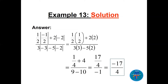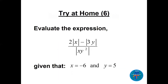The answer is −17/4. Looking at the solution: (1/2) times |−1/2| = 1/2 × 1/2 = 1/4. Then 2 × |−2| = 2 × 2 = 4. The denominator: |−3| = 3 and |−2| = 2, so 3×3 = 9 down; 5×2 = 10 with a minus. Using LCD, 1/4 + 4 gives 17/4, divided by −1, which equals −17/4.